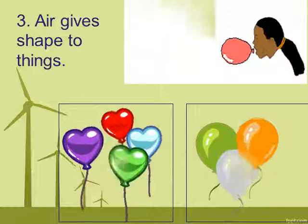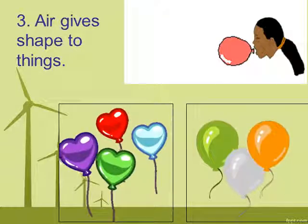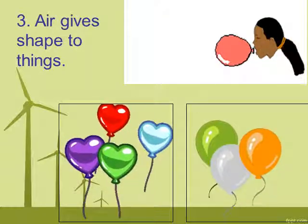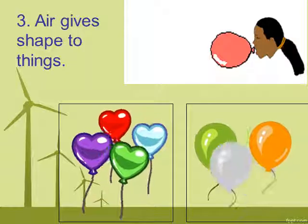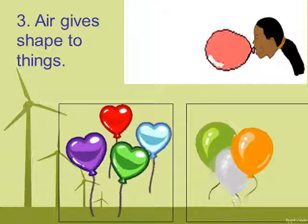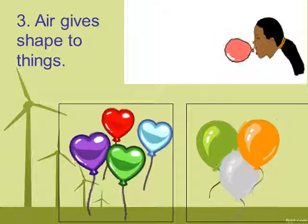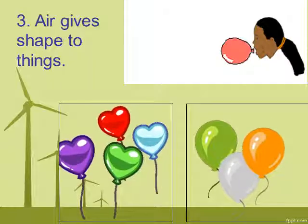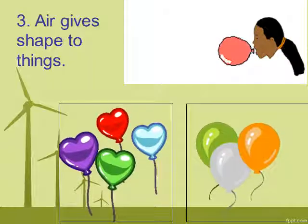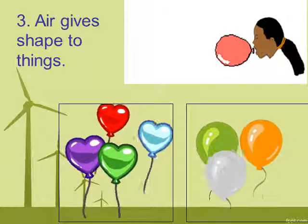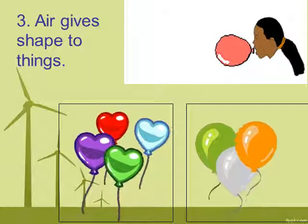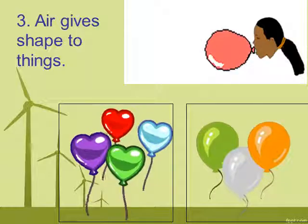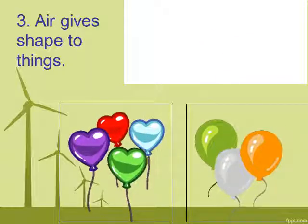Property three: Air gives shape to things. Take two or three different sizes and shapes of balloons and blow them. You can observe that as the air fills into different balloons, it takes the original shape of the balloon. This proves air gives shape to things.